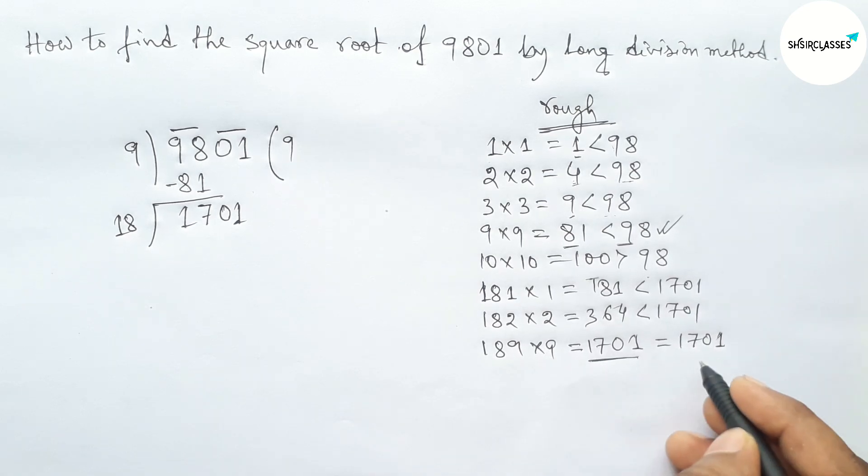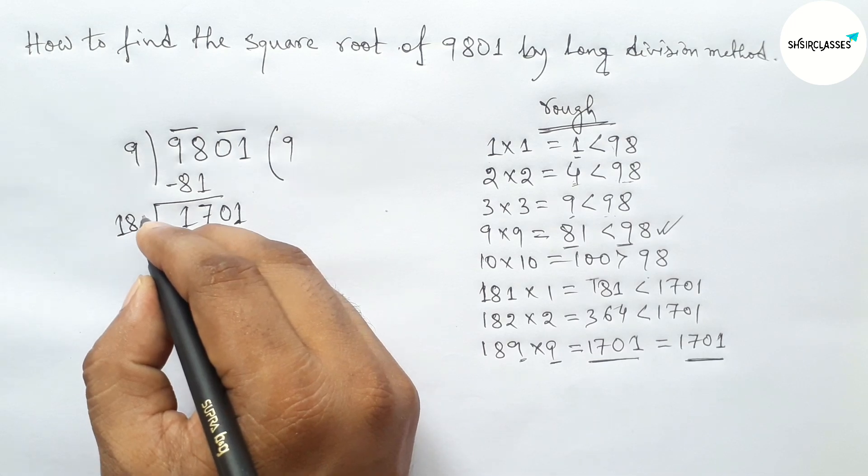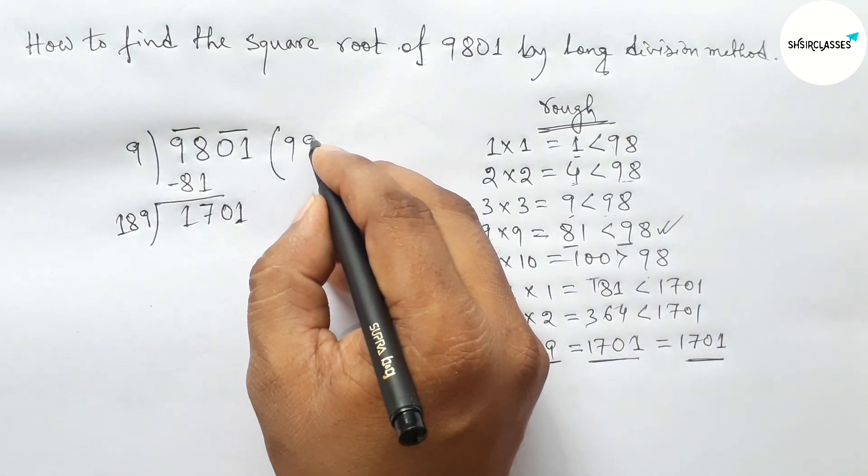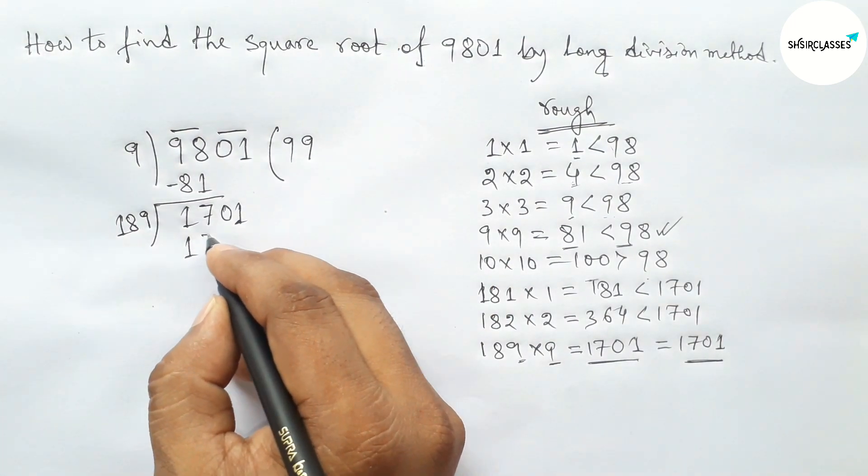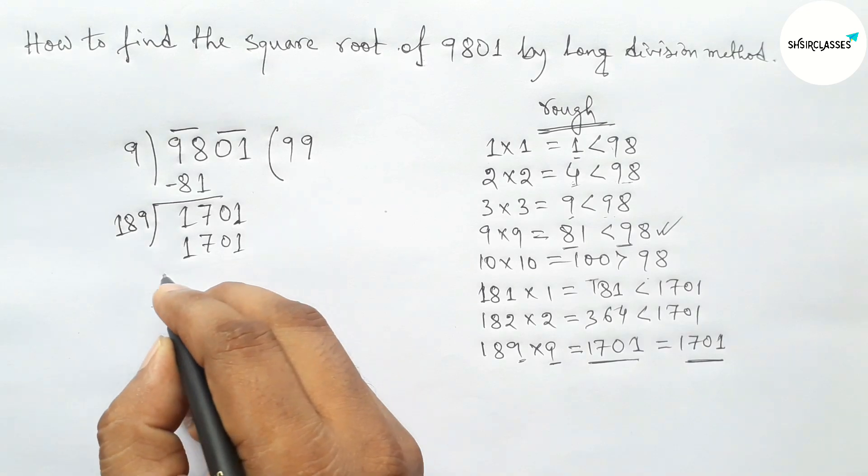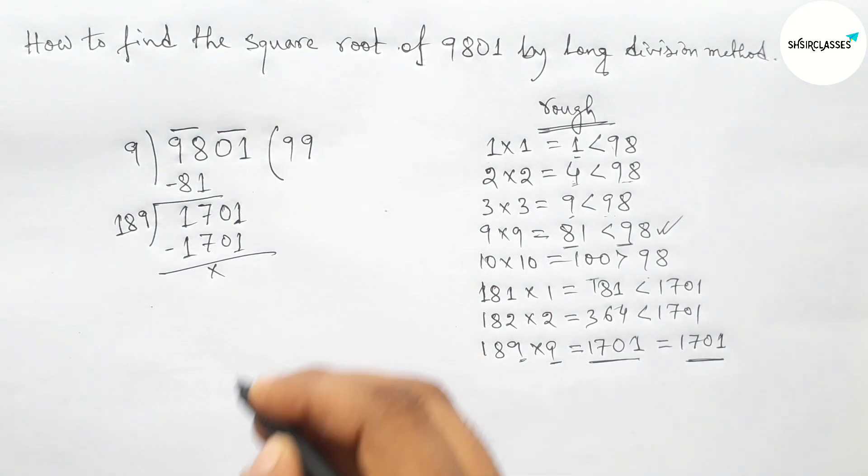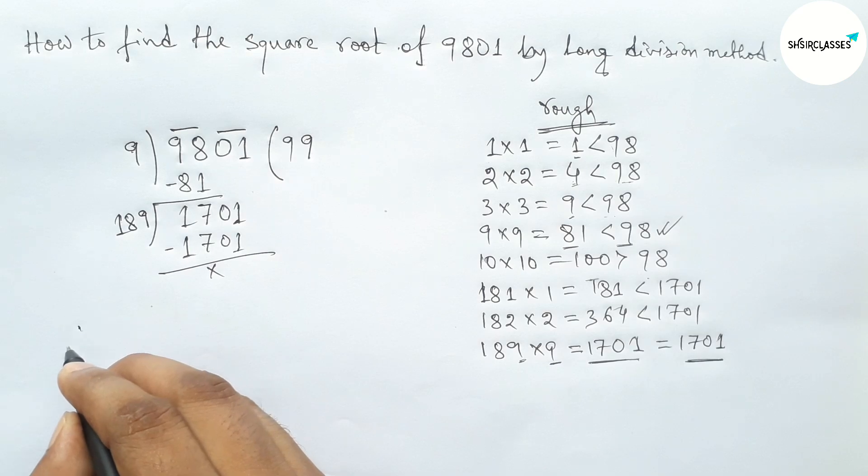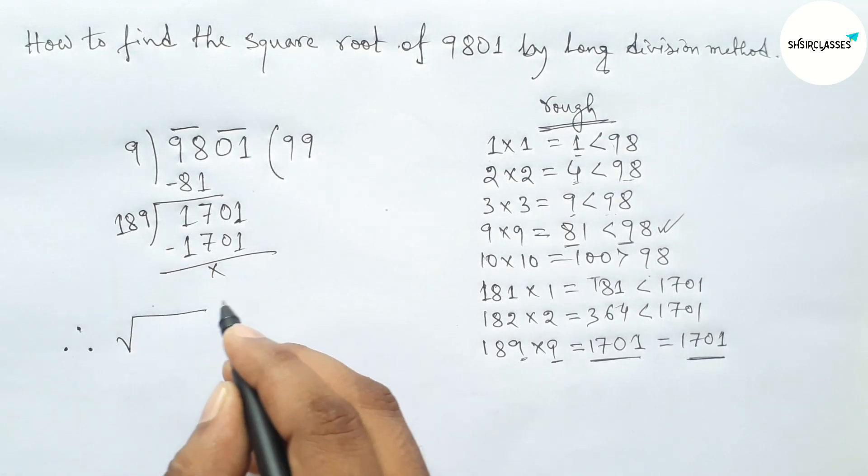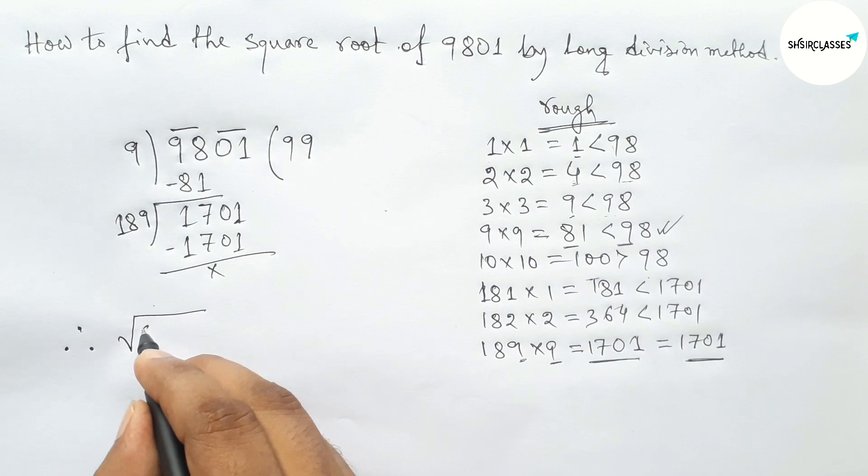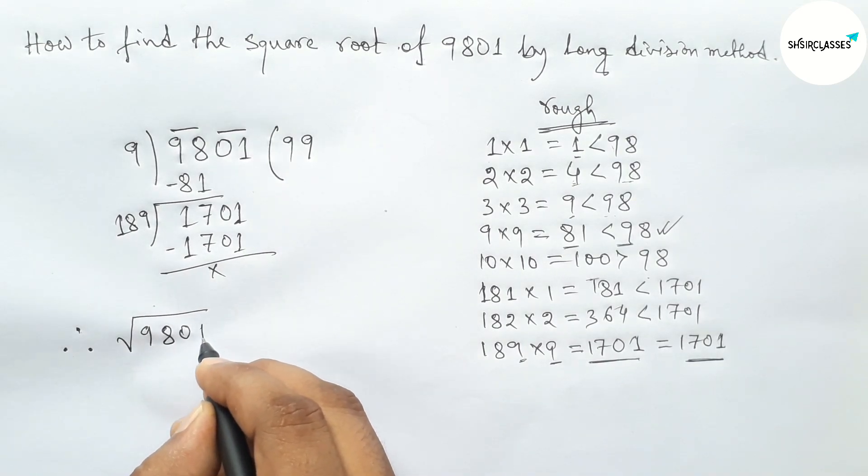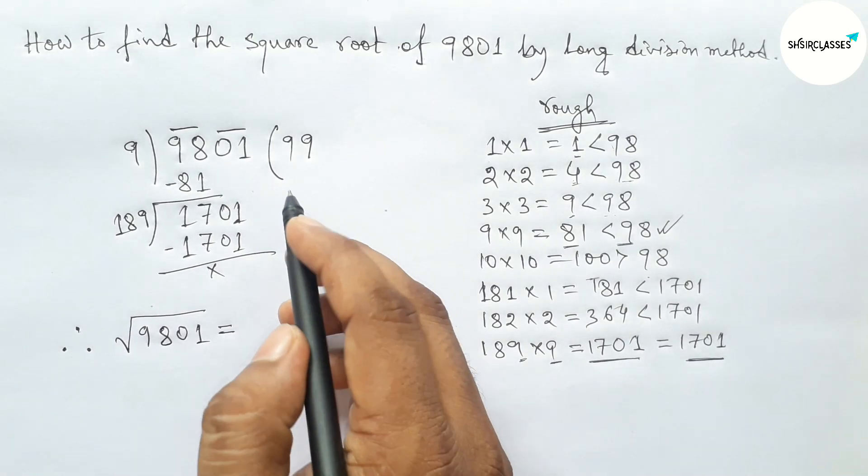So taking here 9 and here also 9. So 189 times 9 equals 1701. Now subtracting this, so the remainder is 0. Therefore, the square root of 9801 equals 99.